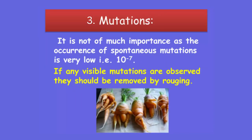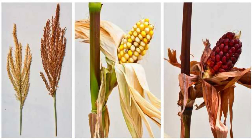The next factor is mutations. This is not of great importance as the occurrence of spontaneous mutations is very low. If any visible mutations occur, you can simply remove them by rogging operations. Examples visible here include a mutant carrot and a mutation outcome in the case of maize.